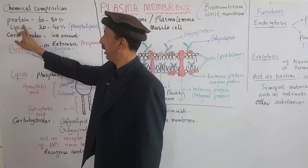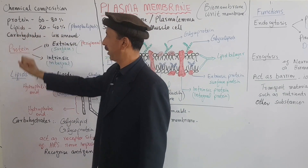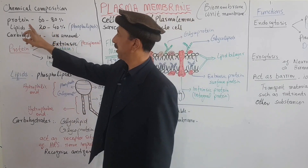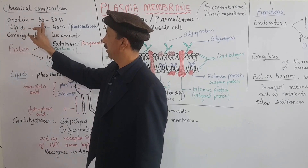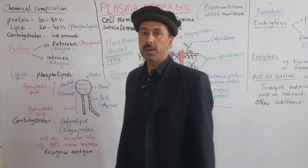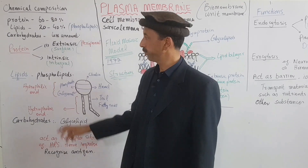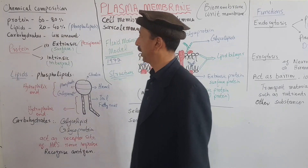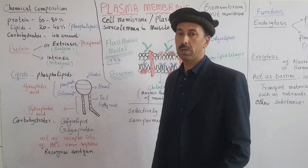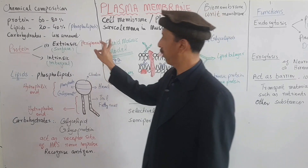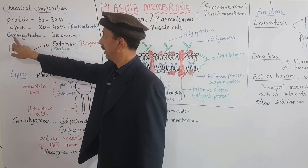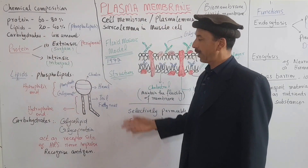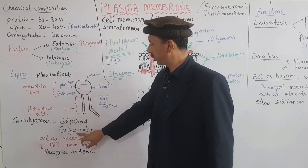The plasma membrane is made up of chemicals: proteins, lipids, and carbohydrates, but these are present in different percentages. Proteins are present in 60 to 80 percent.